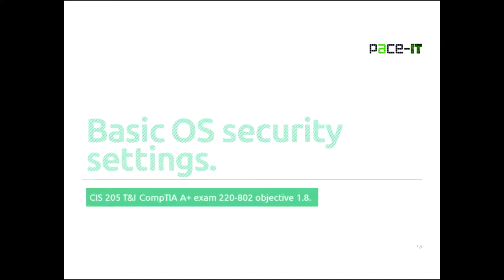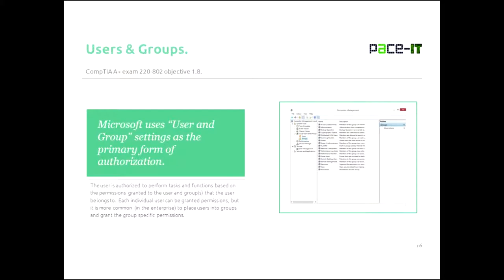Now let's move on to basic operating system security settings — objective 1.8. The first thing we're going to talk about is users and groups. Microsoft uses user and group settings as the primary form of authorization to perform tasks. A user is authorized based on the permissions granted to that user and/or the groups the user belongs to. Each individual user can be granted permissions, but it is common practice to assign users to groups and assign permissions to those groups instead.